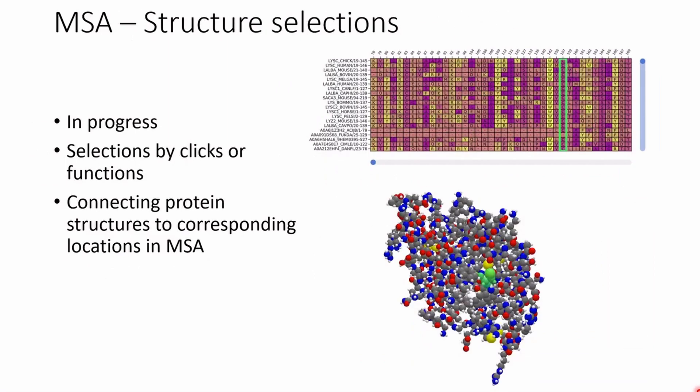Some in progress work is enabling selection by clicking with the cursor or programmatically using functions. I'm also trying to get the selection of multiple sequence alignments and structures to be connected. So when a user selects a residue on the structure or in the multiple sequence alignment, the corresponding location is selected in the other one. This is close to being completed and will probably be complete by JuliaCon.